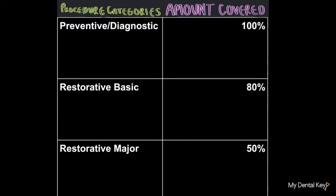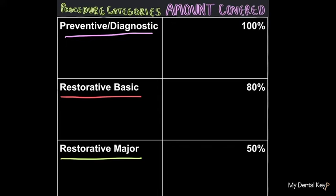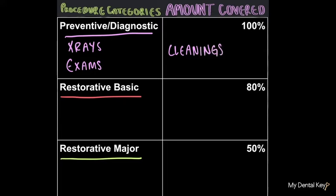Next, we'll take a closer look at the types of procedures this insurance plan covers. Procedures are typically broken down into three categories: preventative/diagnostic, which is often the least involved and simplest procedures; restorative basic, which encompasses more involved procedures as well as some specialty procedures; and restorative major, which is mostly composed of big case procedures. The first we will go over is preventative/diagnostic. This category encompasses x-rays, exams, and cleanings.